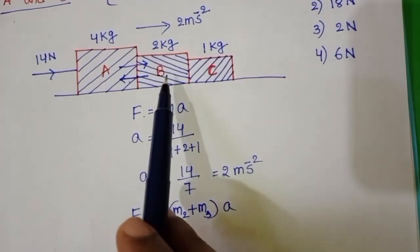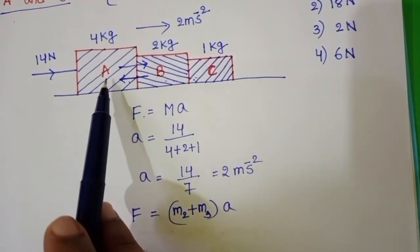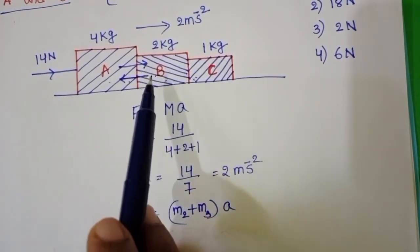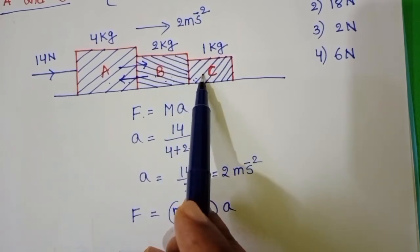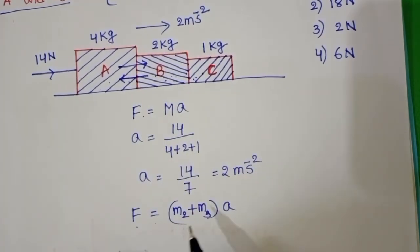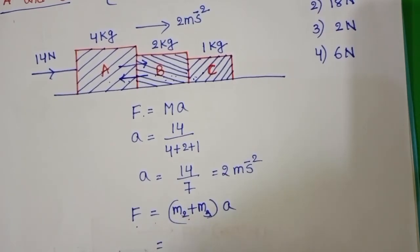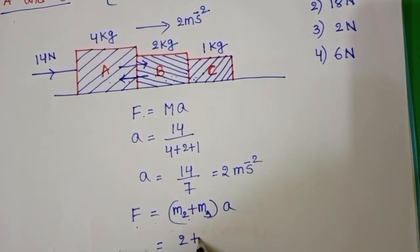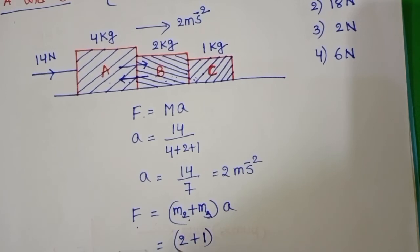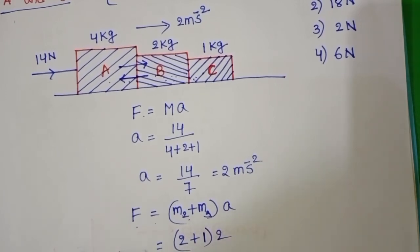B and C are in contact. When A pushes B, at the same time B also pushes C. So F equals (M2 plus M3) times a. Mass of the second block is 2 kg and the third block is 1 kg. Acceleration of the system is 2.